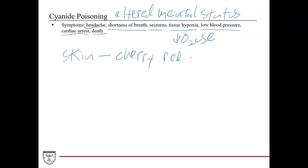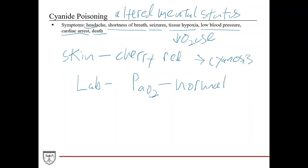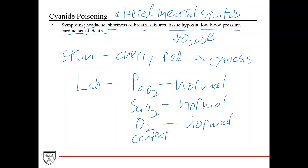You'll sometimes see cherry red appearance described in the skin, especially in a question stem, because the O2 content is still normal — the O2 is not being used. Eventually though, patients can progress to cyanosis. Something important to note is the blood gas in a cyanide poisoning patient: the PaO2 is actually normal, and the oxygen saturation of hemoglobin is also normal, because in contrast to carbon monoxide poisoning, cyanide doesn't interfere with hemoglobin's ability to bind oxygen. So the O2 content within the blood is still normal — it's at the tissue level where you have decreased use of O2 because you can't carry out the electron transport chain.